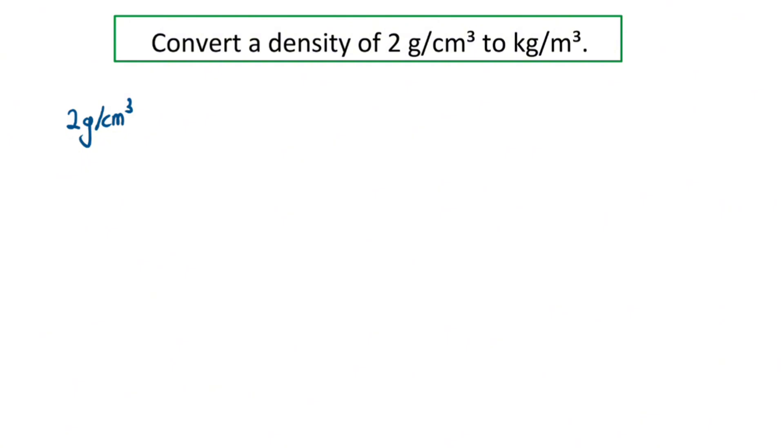First, let me rewrite this 2 g/cm³ as 2 × (1 g / 1 cm³). Then next, we are going to individually convert the 1 gram to kg and the 1 cm³ to m³.